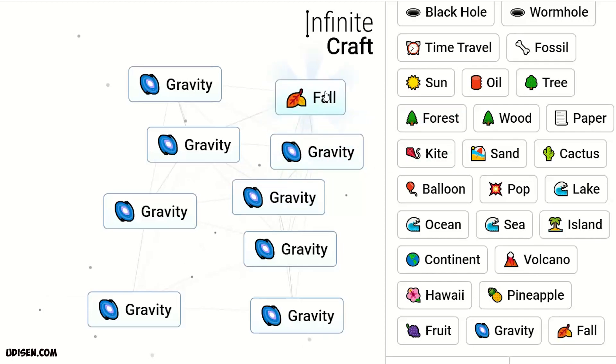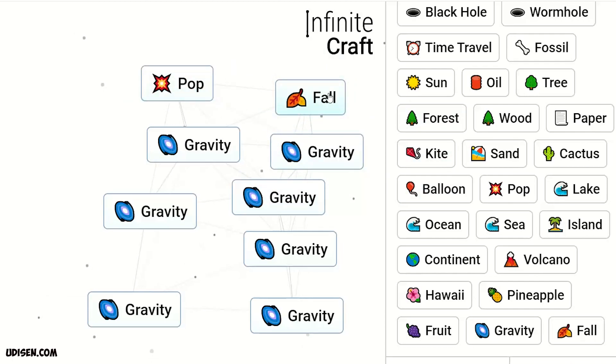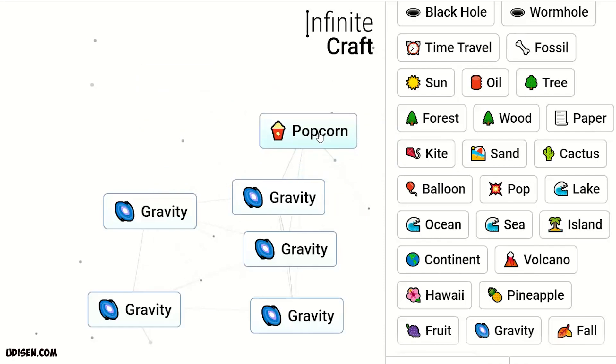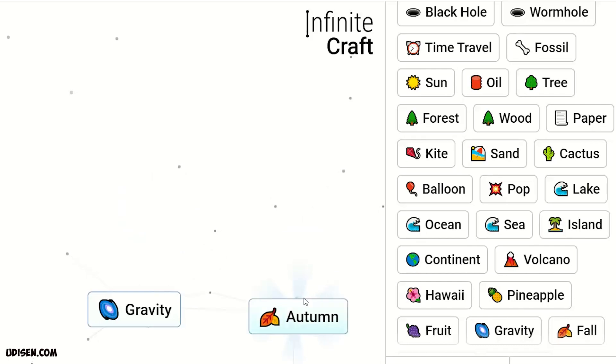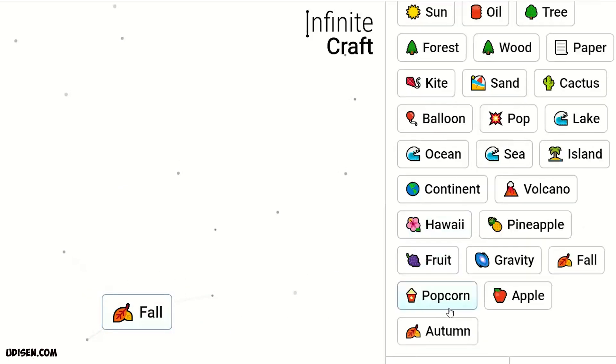Kite and gravity, balloon and gravity makes pop. Pop and gravity makes popcorn. Oil and gravity makes black hole. Tree and gravity makes apple. Apple and gravity makes fall. Fall and gravity makes autumn. Autumn and gravity makes fall.